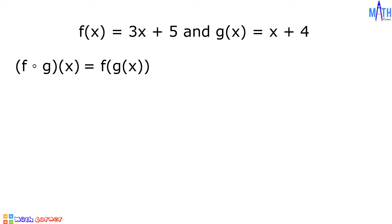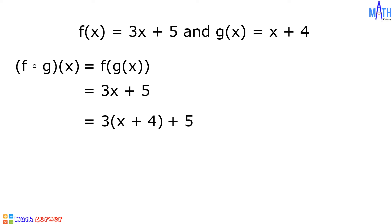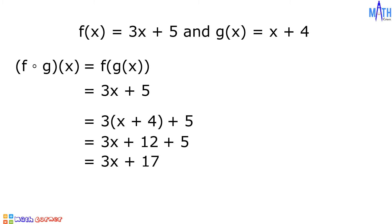Let us substitute x plus 4 to x in f of x. Since f of x is equal to 3x plus 5, 3x becomes 3 times quantity x plus 4, plus 5. Let us multiply 3 by quantity x plus 4. 3 times x is equal to 3x and 3 times 4 is equal to positive 12, plus 5. Since 12 plus 5 is equal to 17, then it is equal to 3x plus 17. And f of g of x is equal to 3x plus 17.